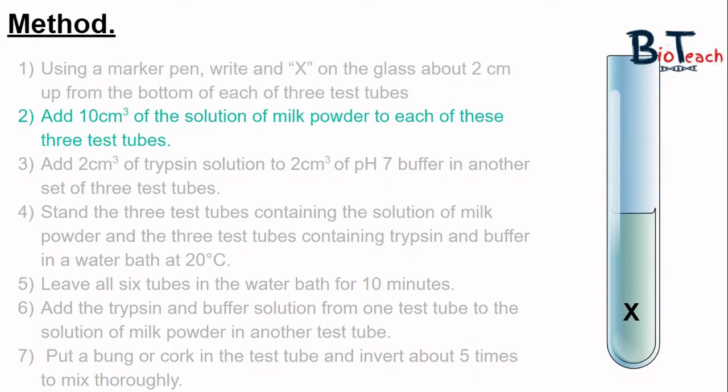You would add the milk solution to three test tubes, and in another three test tubes you will add the enzyme and the buffer. If you have not heard of buffer solution before, you should note down that this is used to ensure that the pH remains stable or constant.